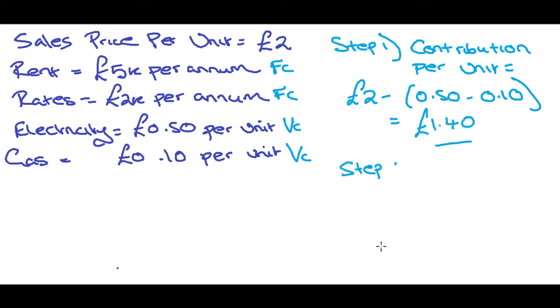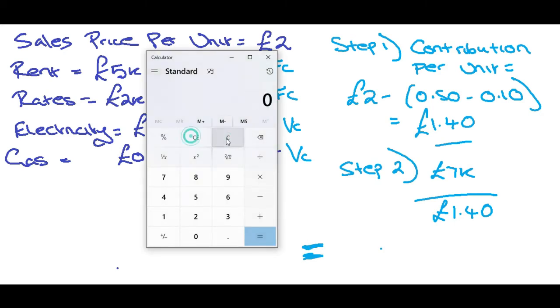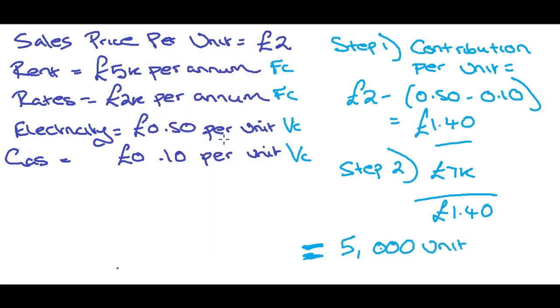Now step two is then to work out the volume. So how many do we need to make of this unit in order to cover all of these fixed costs that we have? So if we take £7k, divide that by £1.40, that's going to give us the volume that we need to make. So here we do that. So that gives us exactly 5,000 units that we need to make.